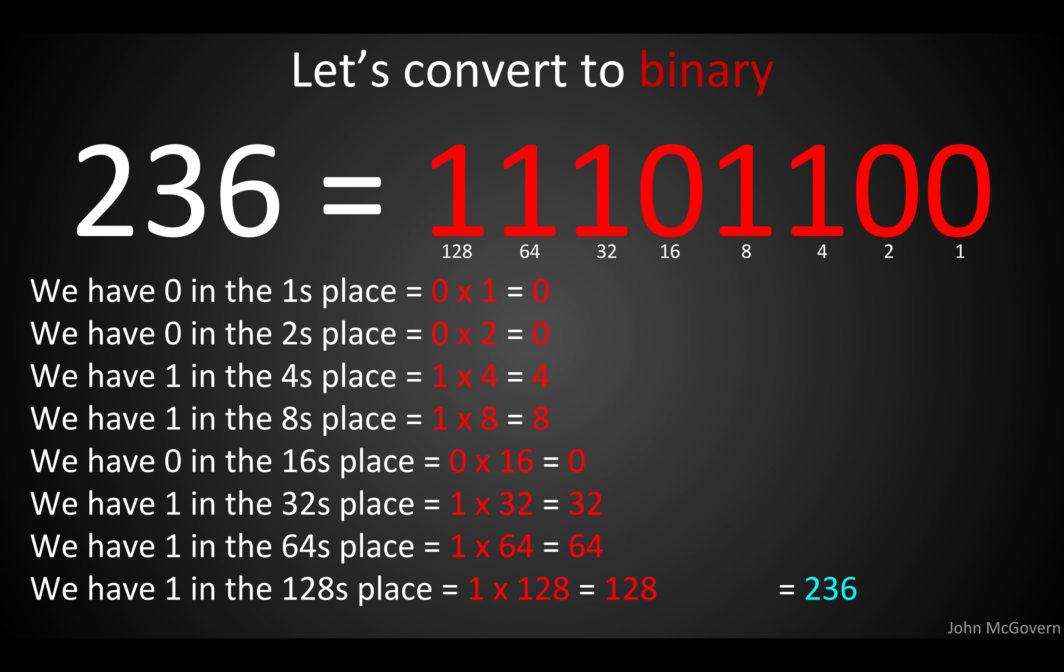So let's do that math. Zero times one is zero. Zero times two is zero, because we have a zero in that place. We have one four, one eight, 1 32, 1 64, and one 128. If you add all those numbers up, you get 236.